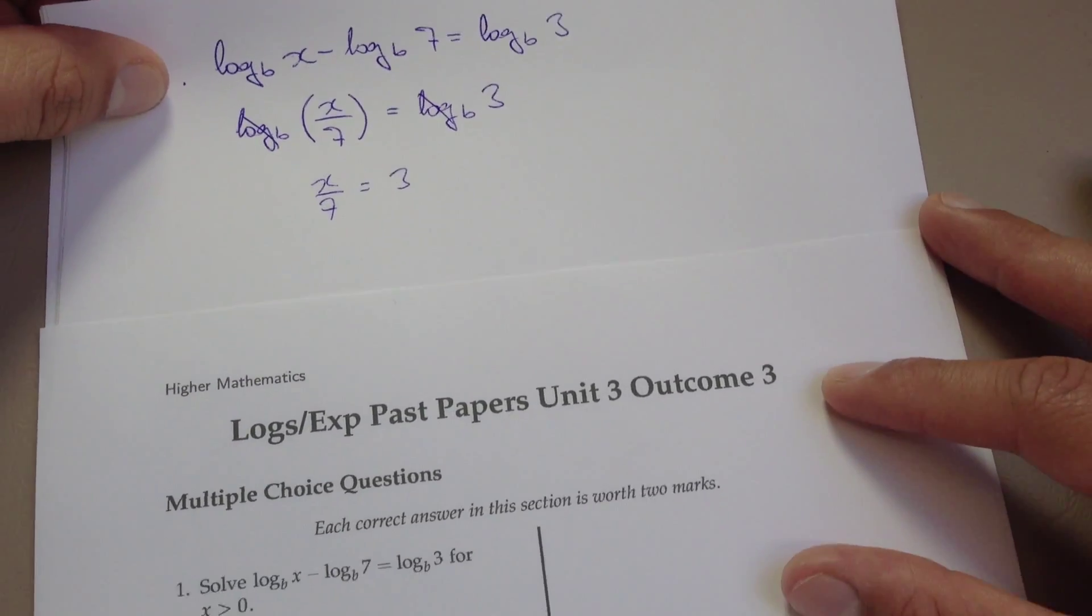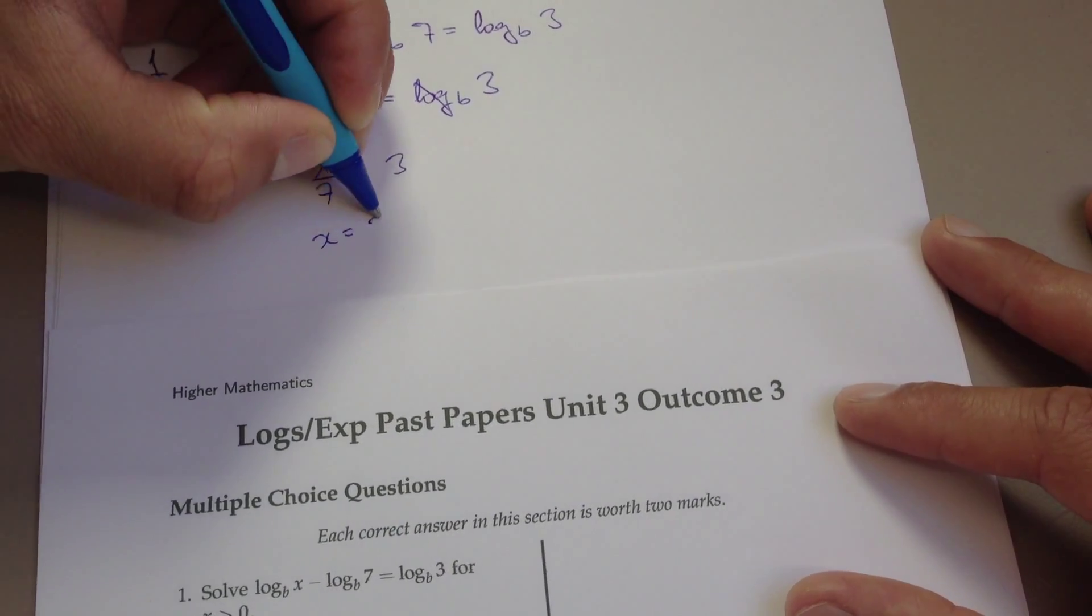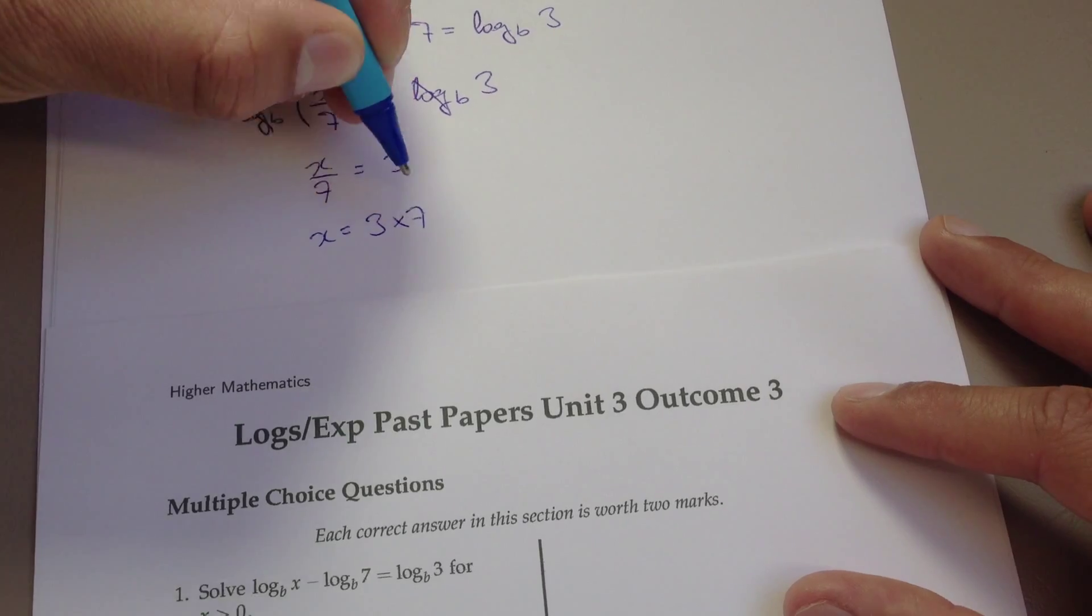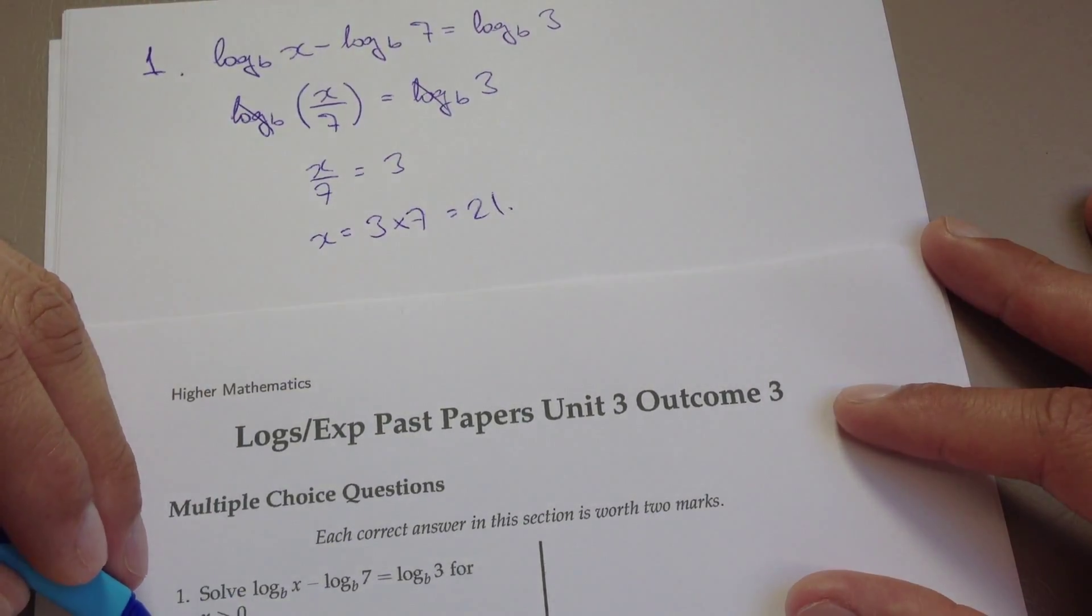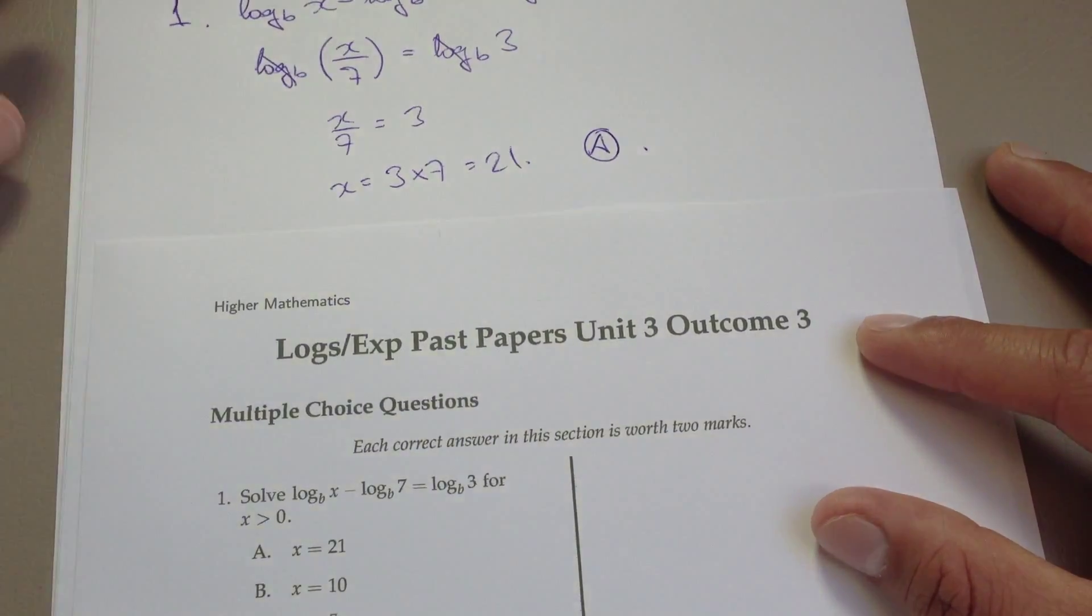And now it's just a simple equation that we can solve. So that's just x equals 3 times 7, which is 21. And that would give our answer a over here. So that's just going to be the answer a.